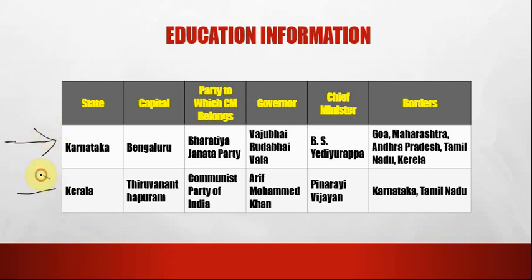The next state is Kerala. The capital of Kerala is Thiruvananthapuram. The party to which the CM belongs is Communist Party of India. The governor is Arif Muhammad Khan. The chief minister is Pinarai Vijayan. The borders are Karnataka and Tamil Nadu.